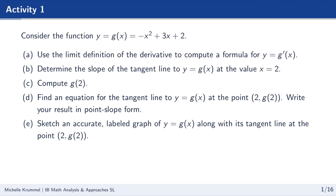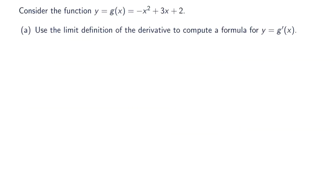Let's start by considering the function g of x equals negative x squared plus 3x plus 2. The first thing we're going to do is use the limit definition of the derivative to find the equation for y equals g prime of x. We'll begin by writing the limit definition of the derivative: the limit as h approaches 0 of g of x plus h minus g of x over h.